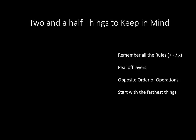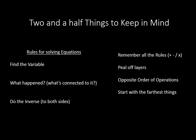So, two and a half things to keep in mind. First off, you have to remember all the rules for multiplying, dividing, adding, and subtracting. We like to, with two-step equations, I like to tell you you're peeling off layers. You start at the thing that's the farthest out, or you do the opposite of the order of operations. Any of those methods that works for you to help you kind of do them in the correct order and get your variable by itself.